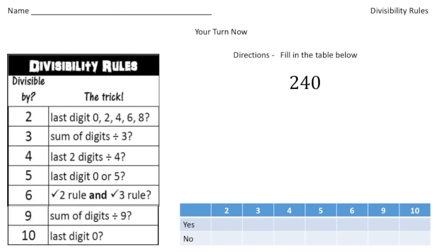Welcome back. Let's see how you do with these practice problems. So, the number 240 is divisible by 2 because it ends in a 0. So that's a yes. The number 3, well, if I add up 2 plus 4 plus 0, we get 6. And 6 is divisible by 3 twice. So, absolutely, that's a yes.